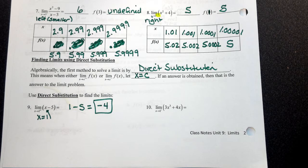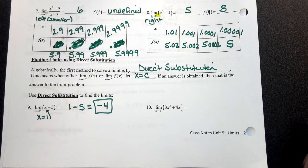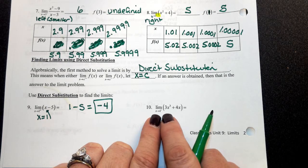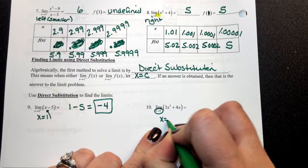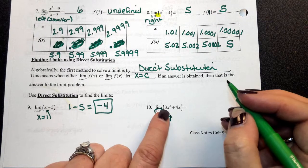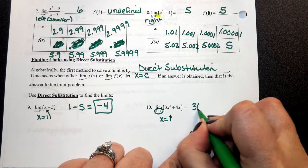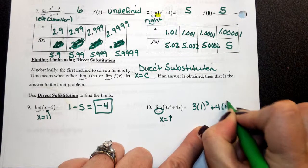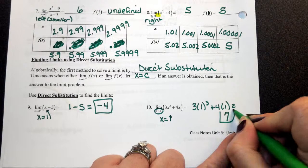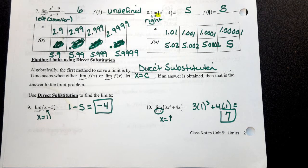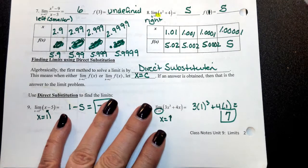Direct substitution only works when the limit is equal to the defined value. We'll talk about what happens when this doesn't work after spring break. For the limit as x approaches 1 from the left of 3x³ plus 4x: set x equal to 1, get 3(1)³ plus 4(1), and that limit is 7.